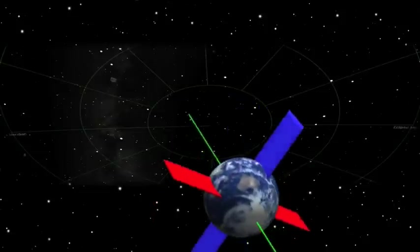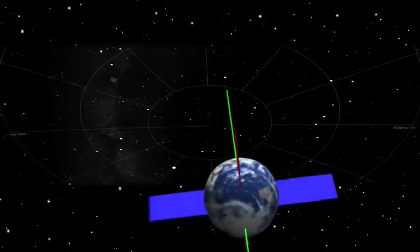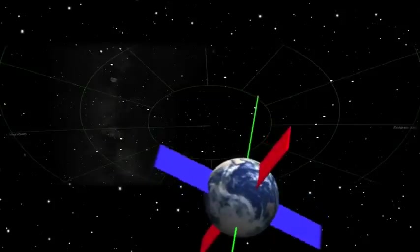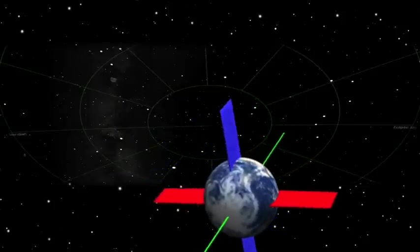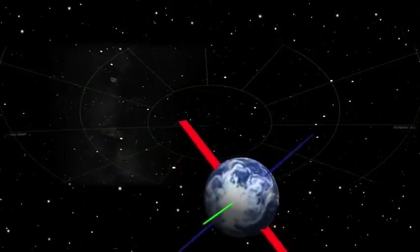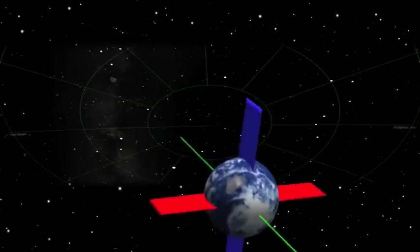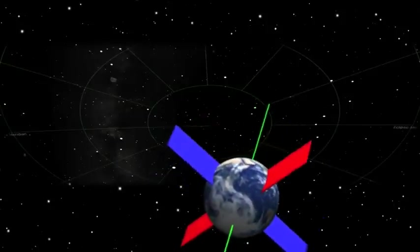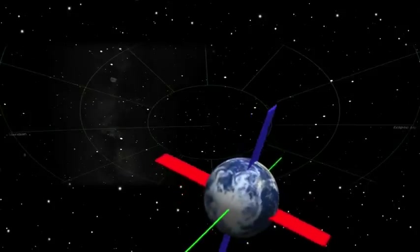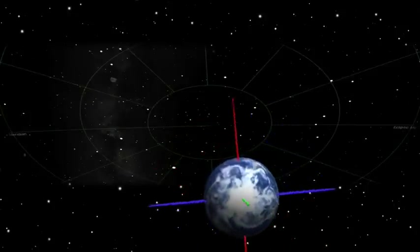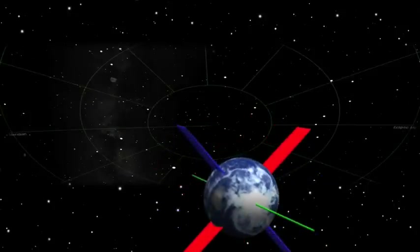Right now, the Earth's axis points towards Polaris. 5,000 years ago, the axis pointed to a star in the constellation Draco. And 12,000 years ago, the brilliant star Vega was the pole star. And because of the 26,000-year cycle, Vega will be the pole star again in 14,000 years.